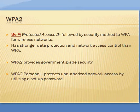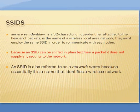SSID, or Service Set Identifier, is a 32-character unique identifier attached to the header packets. It is the name of a wireless local area network. Devices must employ the same SSID to communicate with each other. Because the SSID can be sniffed in plain text from a packet, it does not supply any security to the network. An SSID is also referred to as a network name because essentially it identifies a wireless network.